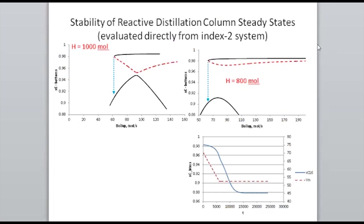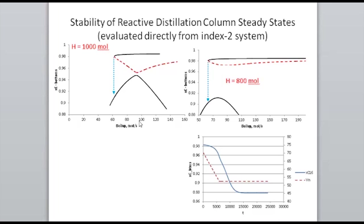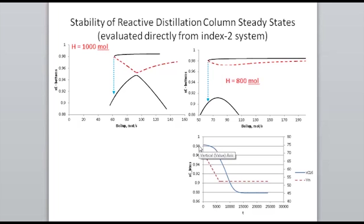You could be operating at the desired upper steady state — slightly greater than 0.98 mole fraction of product at the bottom — and then start slowly reducing boil-up seeing no effect, so the young engineer thinks he's saving money by reducing steam. All of a sudden you fall to the low purity steady state. The bottom graph shows AP Monitor output where the red dotted line is the boil-up rate being reduced from 70 moles per second down to 52, and the mole fraction of product slowly falls from greater than 0.98 down to 0.88, which matches the bifurcation diagram.